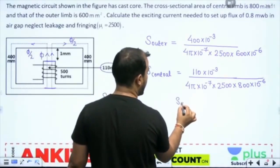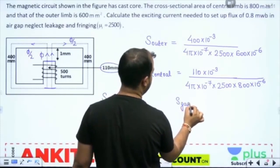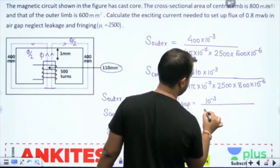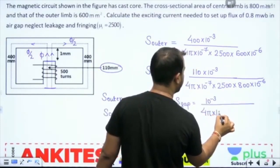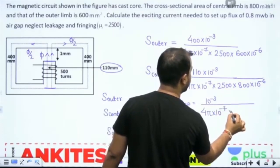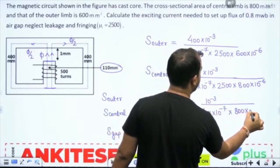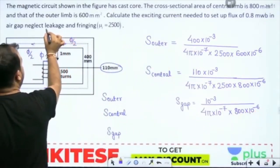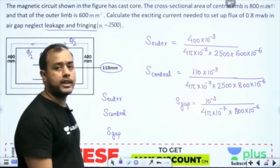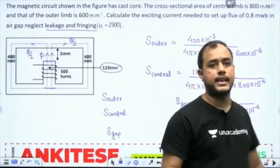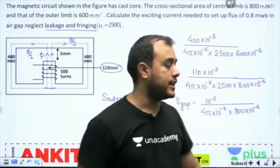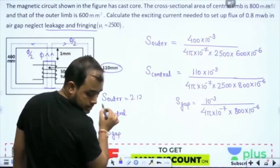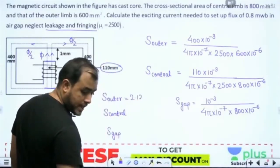The reluctance of the gap also we can calculate. It is 1 mm. We are ignoring fringing. If we are ignoring the fringing, the area remains the same - neglect leakage and fringing. So what is it? 2.12 into 10 to the power 6.